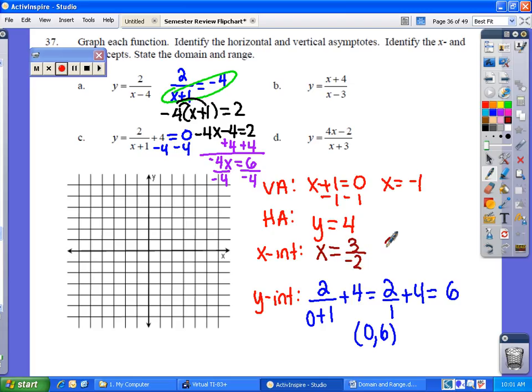Leaving you with an x intercept of three over negative two, which means that you are crossing the x axis at three over negative two.